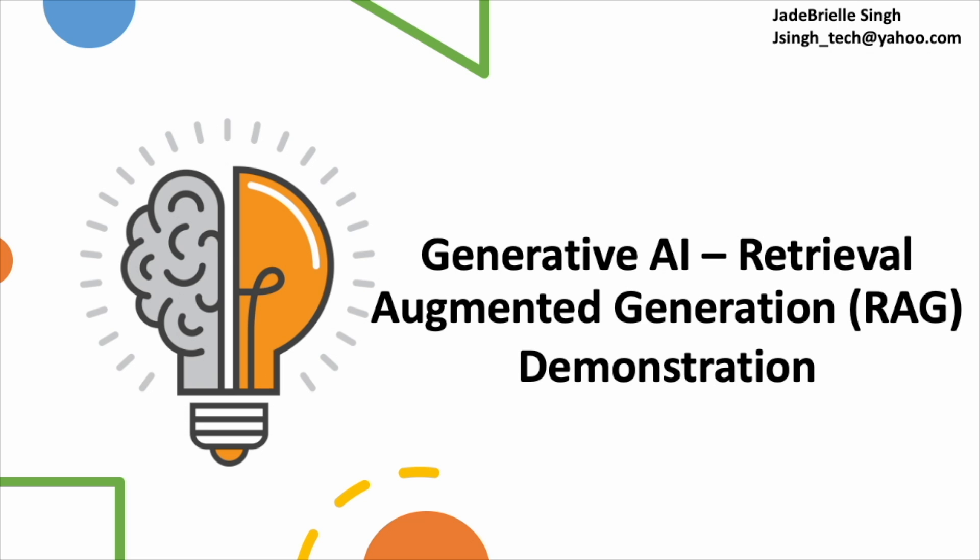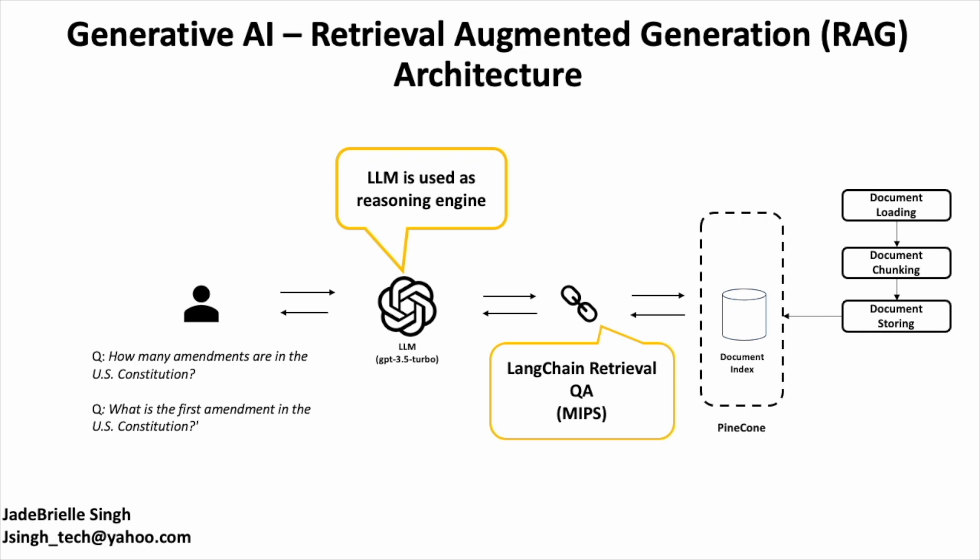I will do a quick demo on Retrieval Augmented Generation by creating a Q&A application. Before I get into the project itself, I want to do a quick architecture breakdown so it's understood what each step is doing. For this architecture, I'm using an external library called Langchain. First, I'm going to go over how we retrieve the data and load it into the database.